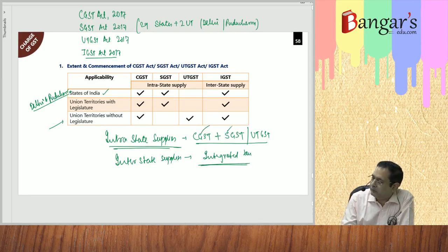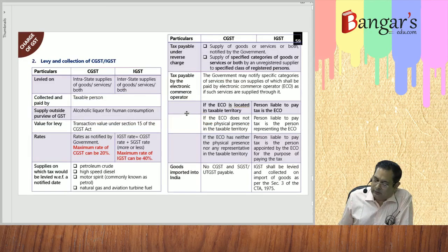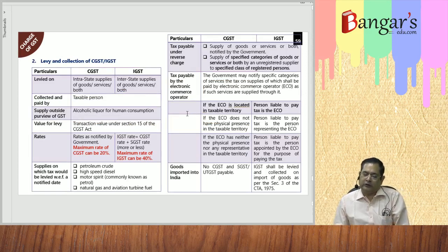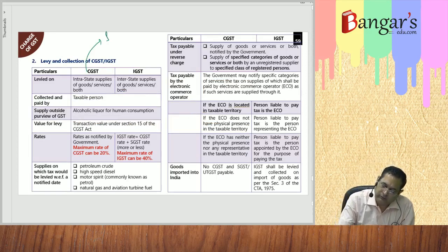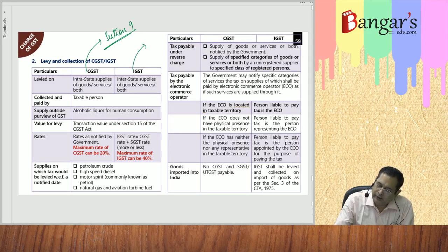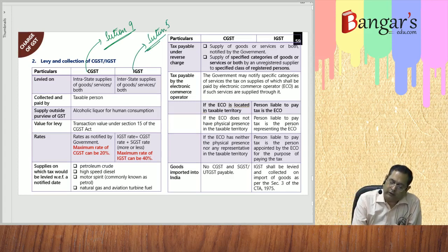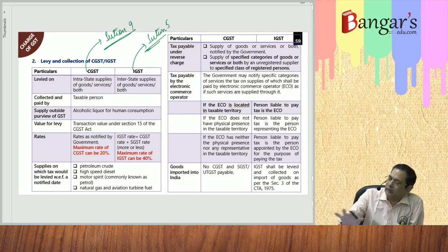The tax is known as central tax, state tax, or union territory tax. The charging section under CGST is Section 9, and under IGST Act it is Section 5. Central tax is levied on intrastate supply of goods or services or both, and integrated tax is levied on interstate supply of goods or services or both. This summary is available in our compiler as well.